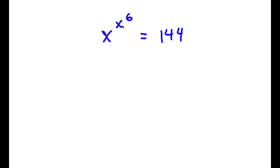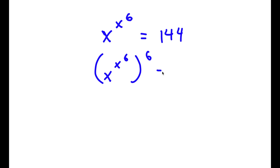Alright, so I have x to the power of x to the power of 6, is equal to 144. The first thing I'm going to do is take the power of 6 on both sides. So now I have x to the power of x to the power of 6, all to the power of 6, is equal to 144 to the power of 6.